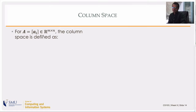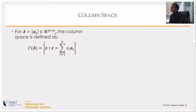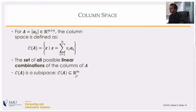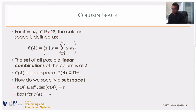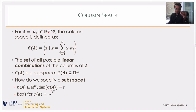For a matrix A with n columns each having m components, the column space is defined as the set of all possible linear combinations of the columns of A — the span of the columns of A. It must be a subset of ℝᵐ since each column vector has m components, so it can be a proper subset or all of ℝᵐ. To specify the column space, you need: the containing space, the dimension (the rank), and the basis vectors.